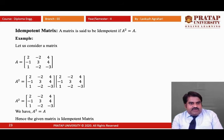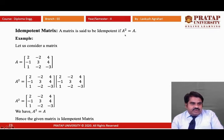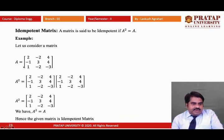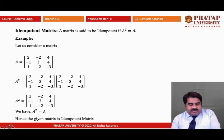Now, the idempotent matrix. A matrix A is said to be idempotent if A² = A. An example is given: matrix A is computed and A² equals the original matrix A, so the given matrix is an idempotent matrix.